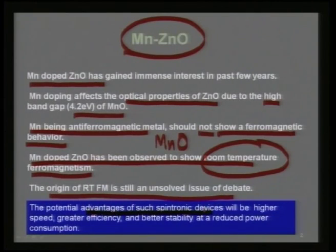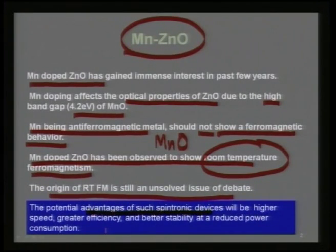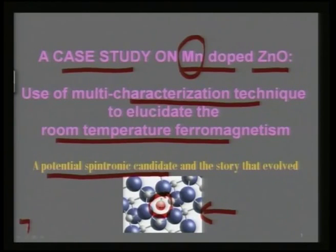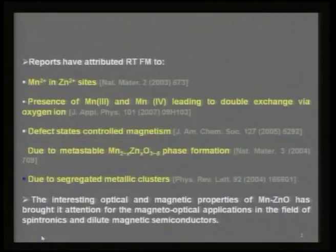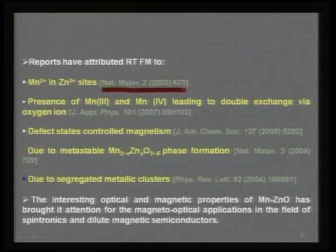The potential advantage of such spintronic materials is that you can make a spintronic device with higher speed, greater efficiency, and better stability at reduced power consumption. With this in perspective, let us see where it all started and how the story evolved. Reports started coming as early as 2003 with breaking news in Nature Materials.